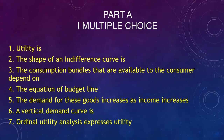Question 4: The equation of the budget line — options A, B, C, D. Question 5: The demand for these goods increases as income increases — options: inferior goods, different goods, normal goods, none of the above. Question 6: A vertical demand curve is — perfectly elastic, perfectly inelastic, unitary elastic, or none of the above. Question 7: Ordinal utility analysis expresses utility in — numbers, returns, ranks, or awards.